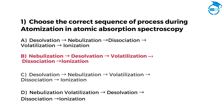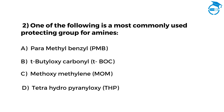Now let us quickly move to question number two. One of the following is the most commonly used protecting group for amines. Option A: para-methyl benzopine B. Option B: tert-butyloxycarbonyl (Tboc). Option C: methoxymethyl ether. Option D: tetrahydropyranyl oxy (THP). You have got seven seconds. If you know the answer, mention it in the comments. The time starts now.